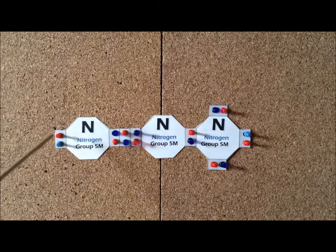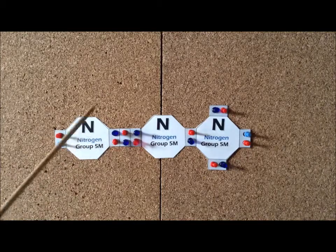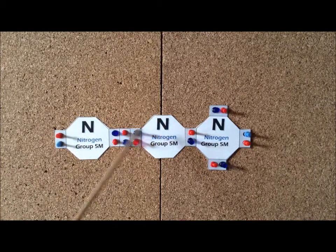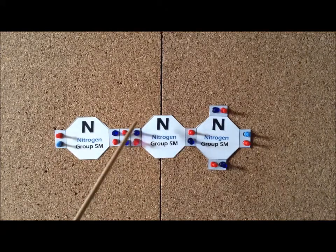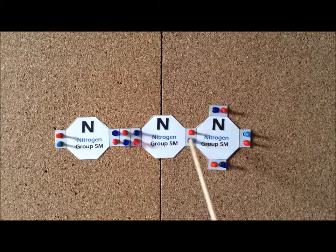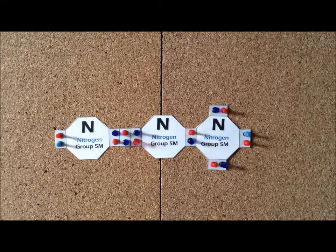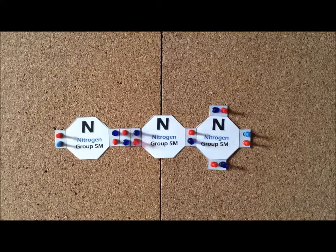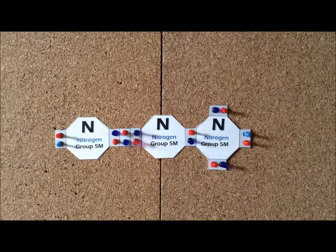We notice that this nitrogen has 2, 4, 6, 8 electrons for that nitrogen. This nitrogen here has 2, 4, 6, 8. So the octet rule is satisfied there. And for the last nitrogen on the right, 2, 4, 6, 8. So we're able to satisfy the octet rule for all three nitrogen atoms with a different arrangement of electrons, a different resonance structure.